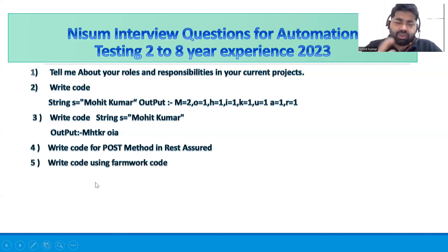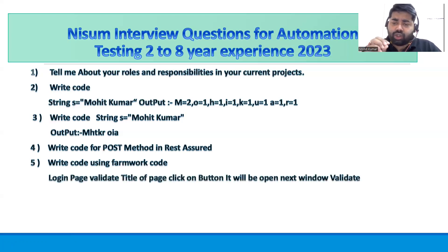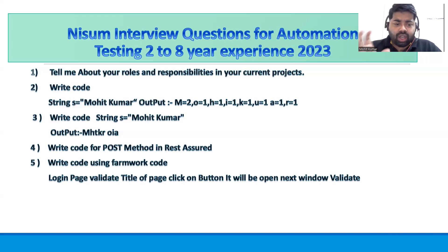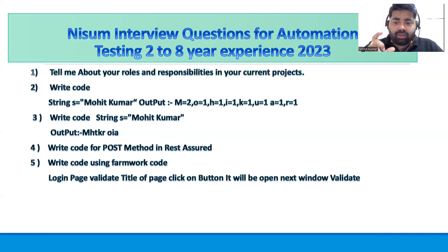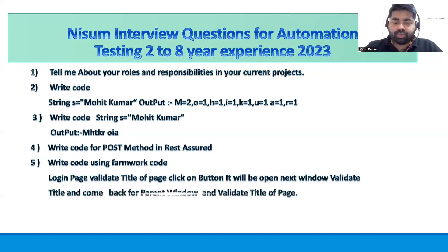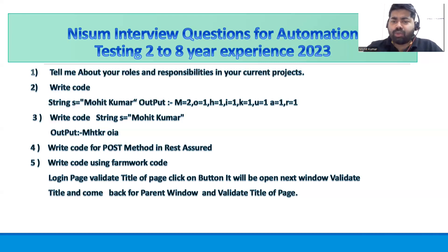The fifth question is a Selenium scenario — very basic if you know Selenium. They ask you to automate a login page, but you have to use the Page Object Model, not write simple code. Create a page object class and a test runner class. Write the login functionality, validate the title of the page, click a button that opens a new window, switch to that new window, get its title, then navigate back to the parent window and validate its title. They want code written in a framework style, not just simple code.